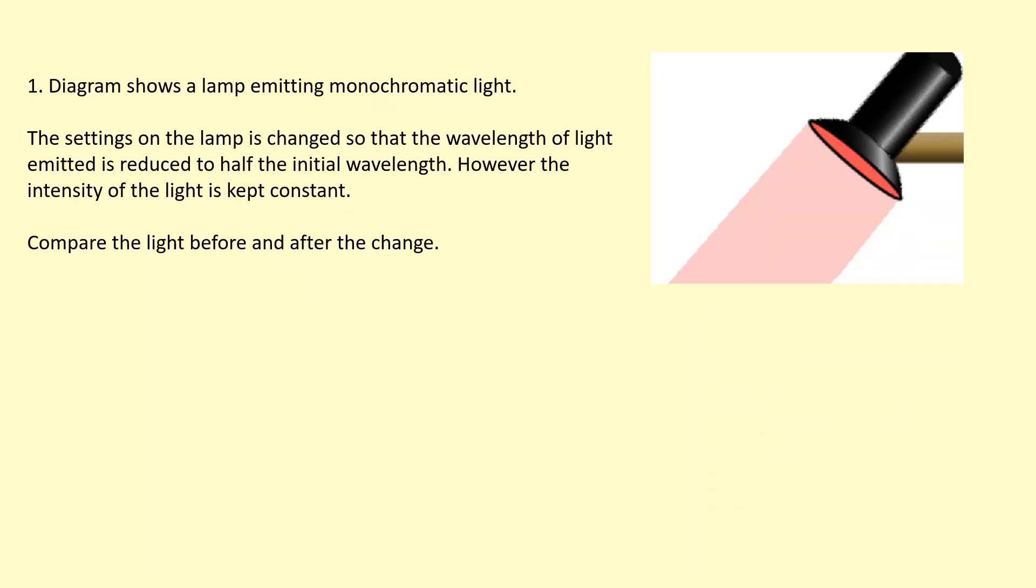In this question the diagram shows a lamp emitting monochromatic light. The setting on the lamp is changed so that the wavelength of the light emitted is reduced to half the initial wavelength. However, the intensity of the light is kept constant. Compare the light before and after the change.